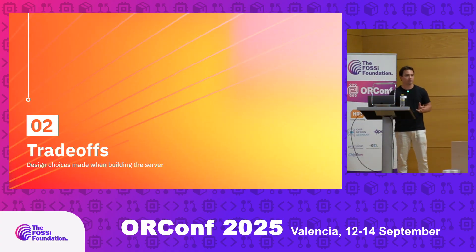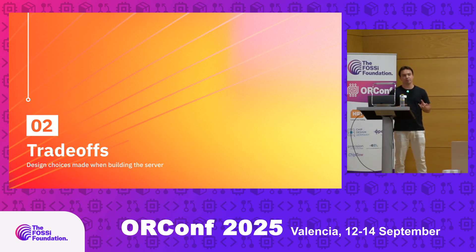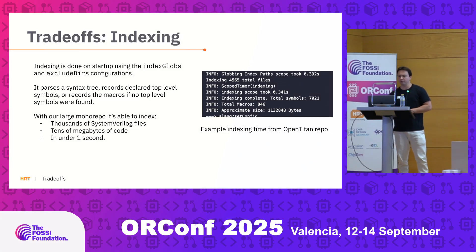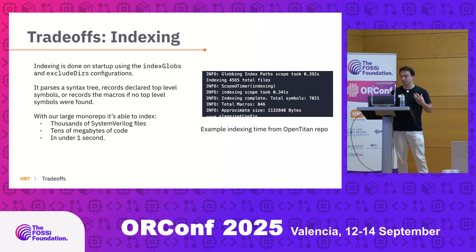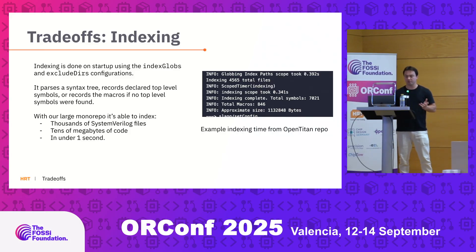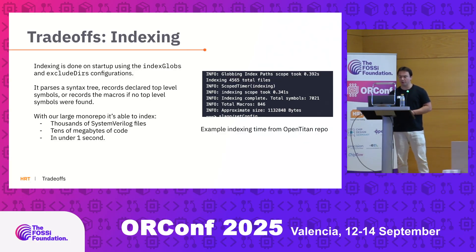So before we get to the features, I wanted to talk about the trade-offs when designing the language server. The protocol tells you all the API routes you could implement — it doesn't tell you how you should go about doing those. The first one is indexing. I'm sure many of you have had the experience where you open up an IDE and it just sits there indexing your codebase. We initially thought this was going to be a problem, but we just tried doing the dumb thing and indexing everything and it actually worked really well. It's able to open and index our codebase on open — thousands of SystemVerilog files, tens of megabytes of code, all under one second. We also tested it on open source repos like OpenTitan, able to index that in about 0.4 seconds. We're okay with this right now, but in the future we could have an index cache.